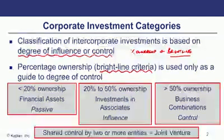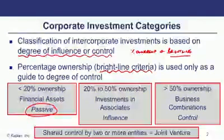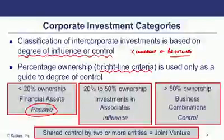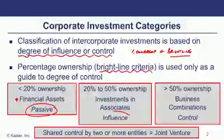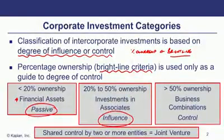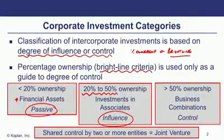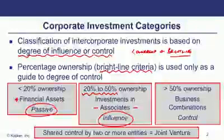With less than 20% ownership, these are passive investments with no influence or control over the other entity's investing, operating, or financial decisions. We refer to these as financial assets, with three major classifications plus a fourth add-on. Between 20% and 50% ownership, we have influence over the entity's financing, investing, and operating decisions. We refer to these as associates. IFRS uses 'associates'; in the US they're often called 'affiliates' — use these interchangeably on the exam.